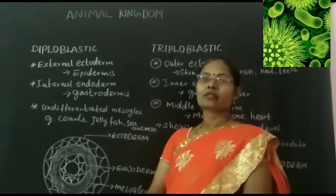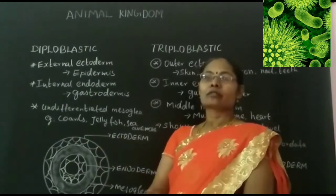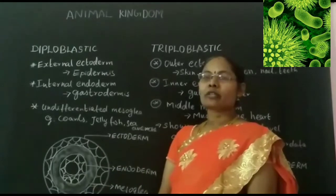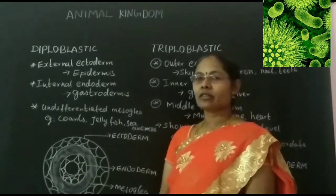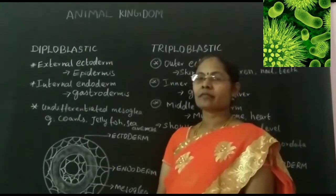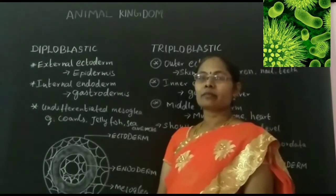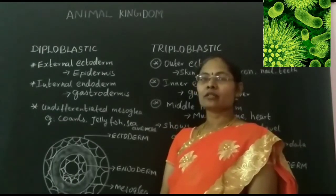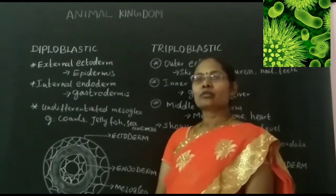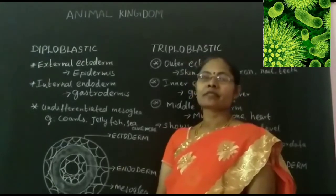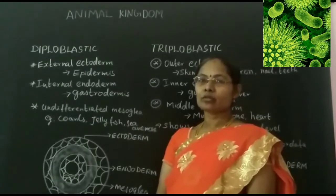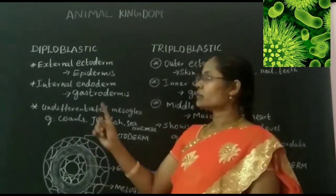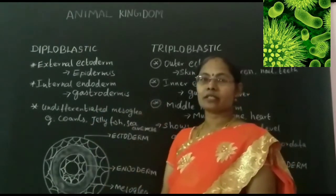Animals are classified into groups and one of the criteria is Diploblastic and Triploblastic organization. During embryonic development, the embryo forms into two or three layers. Depending on these layers, animals are classified into two groups: Diploblastic and Triploblastic.